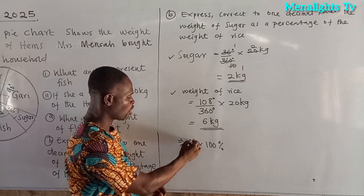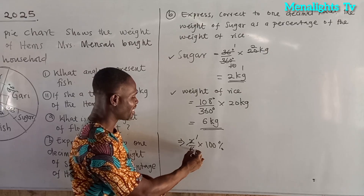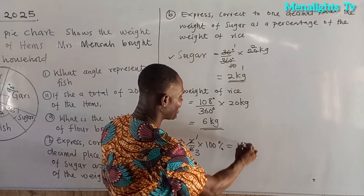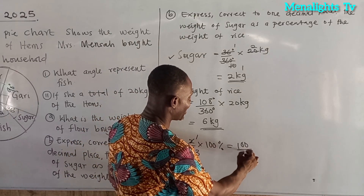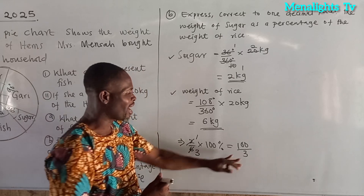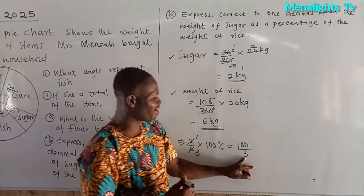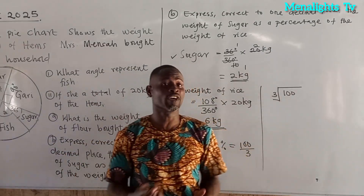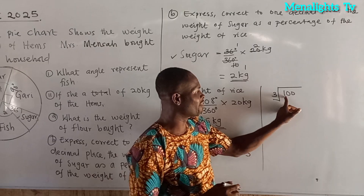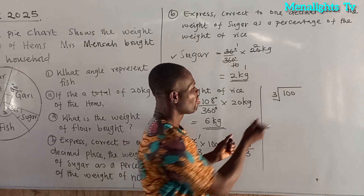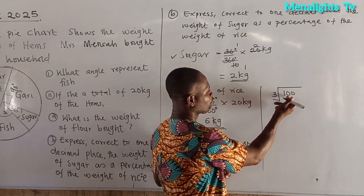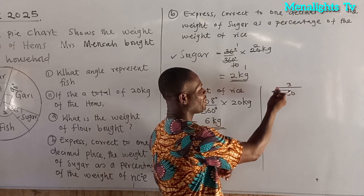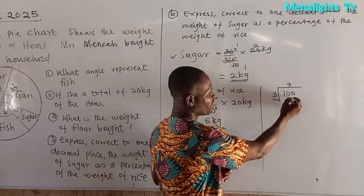So 2 goes into 6 three times, giving us 100 divided by 3. Using long division, 3 goes into 10 three times giving 9, so we continue the division to get 33.3 recurring percent, which to one decimal place is 33.3%.